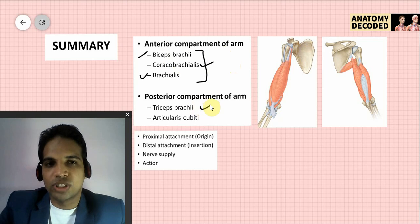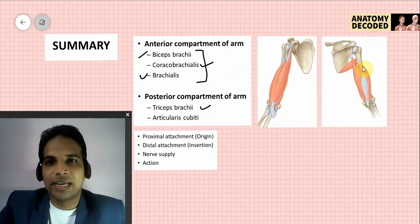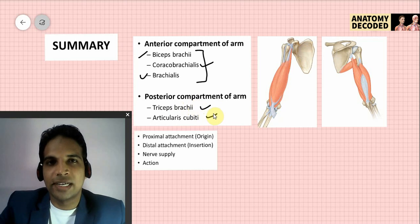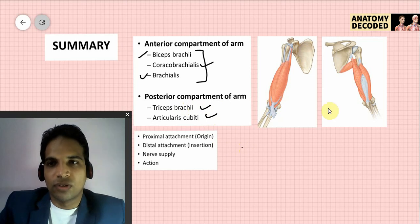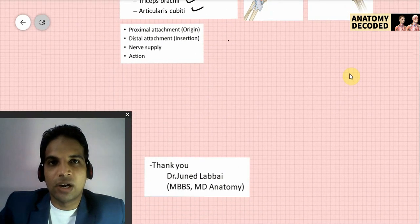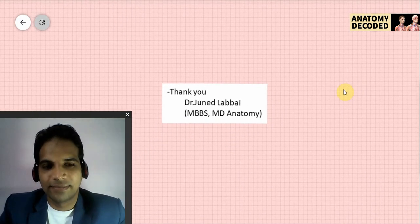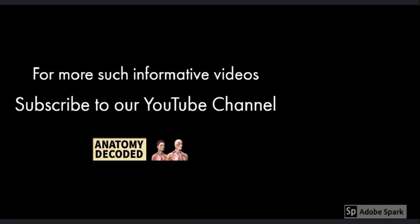Triceps brachii — proximal attachment has three heads: the long head arises from the infraglenoid tubercle, the lateral head from a ridge lateral to the radial groove, and the medial head from the posterior aspect of the shaft of the humerus medial to the radial groove. Nerve supply is the radial nerve; action is that it is the chief extensor of the elbow joint. Articularis cubiti is considered a part of the triceps brachii. This concludes the session — if you have any doubts, please ask in the comment section below. Thank you.